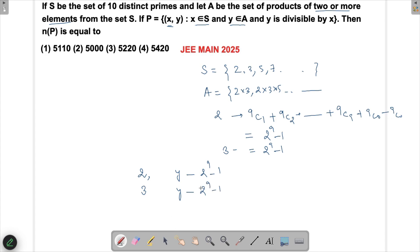In this way, how many do we have? We have got 10 such numbers, so 10 numbers × (2^9 - 1). For corresponding to each prime there will be 2^9 - 1 elements, so 10 × 2^9 - 10 total elements.